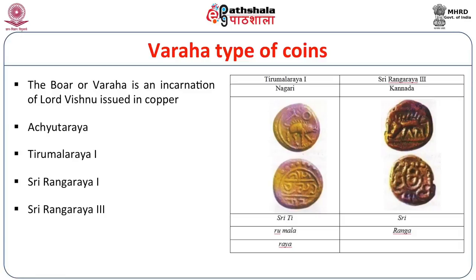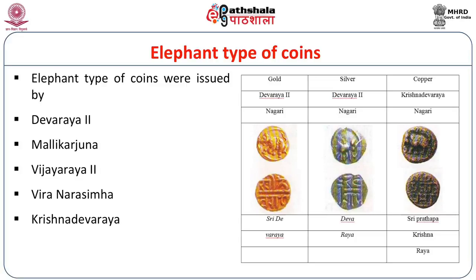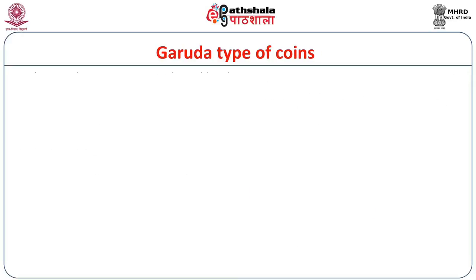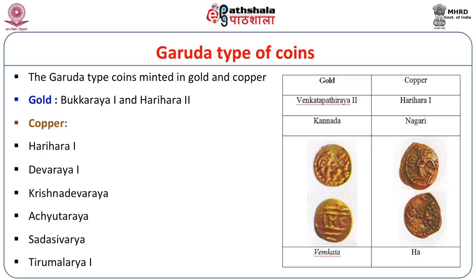The Varaha/Boar symbol is seen on the upper side, with Nandhinagari on the reverse. On the Srirangaraya III type, the Kannada legend 'Sriranga' is written on the coin. Elephant type coins were issued by Devaraya II, Mallikarjuna, Vijayaraya II, Vira Narasimha, Krishnadevaraya, Achyutraya, Sadasivaraya, and Thirumalaraya I, minted in gold, silver, and copper. The elephant running is seen on the gold coins, with Nagari script on the reverse. Garuda type coins were minted in gold and copper — Garuda being the vehicle of Vishnu. Bukkaraya I and Harihara II issued Garuda type coins in gold, while copper Garuda coins were issued by almost all rulers of the Vijayanagara Empire.